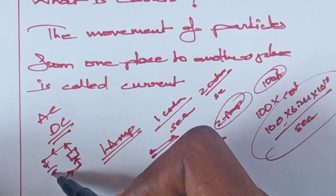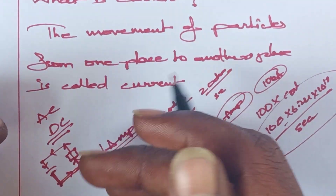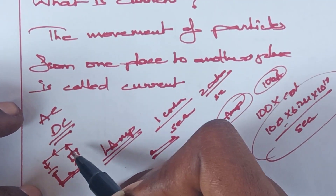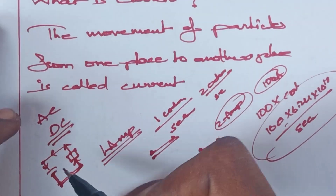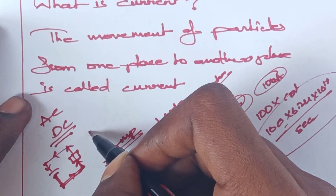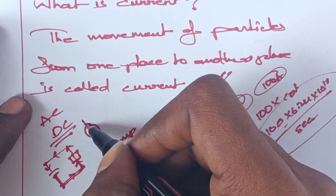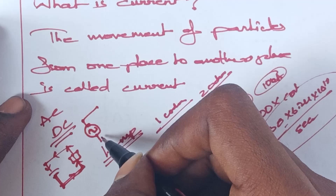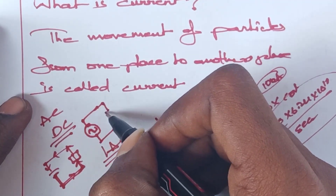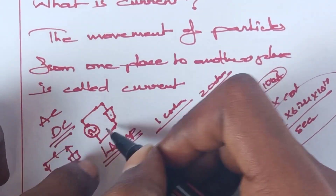This is the direction of current in DC. Whereas in AC, there is a sinusoidal wave to represent it. Here, a sinusoidal wave is used to determine the direction of current. In DC, this is the source and load.